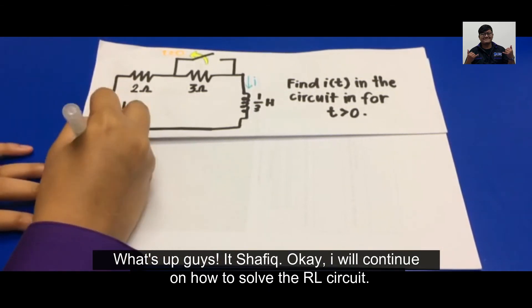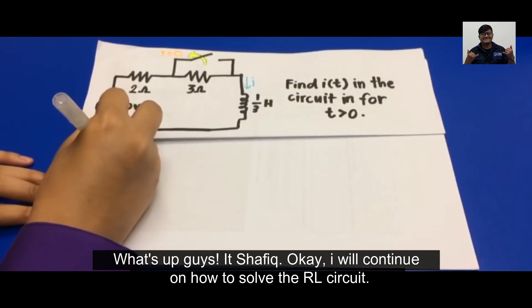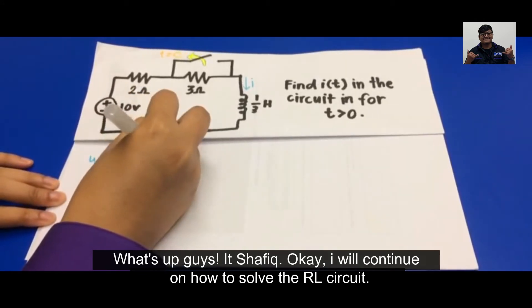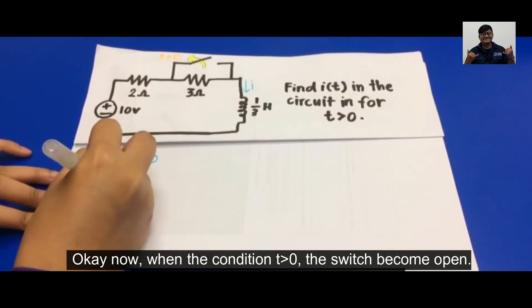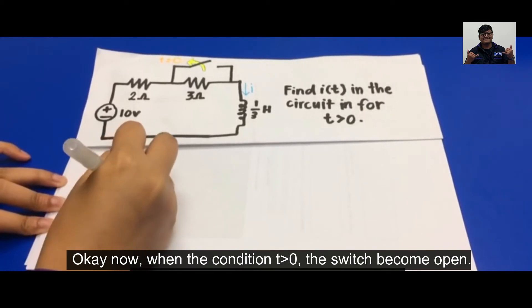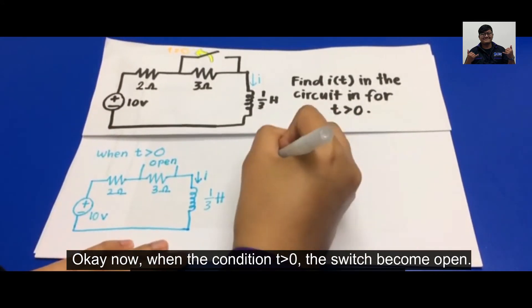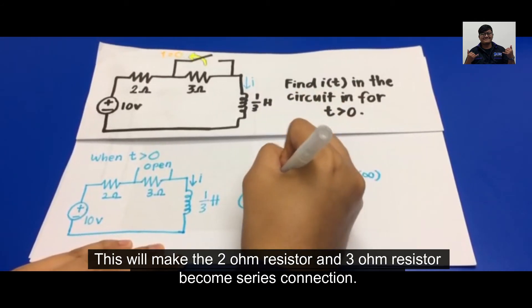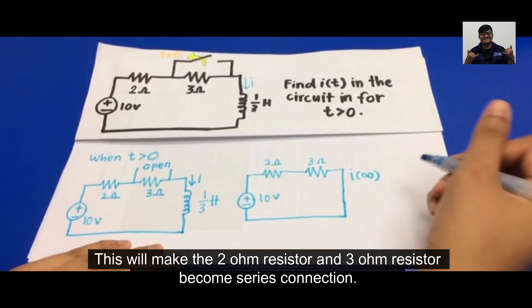What's up gang, it's Shafiq. I will continue on how to solve the RL circuit. Now, when the condition T is larger than zero, the switch becomes open. This will make the 2 ohm resistor and 3 ohm resistor become series connection.